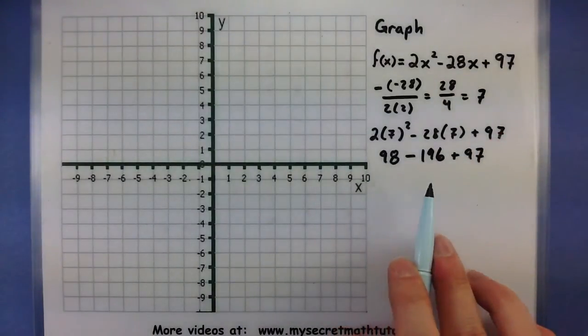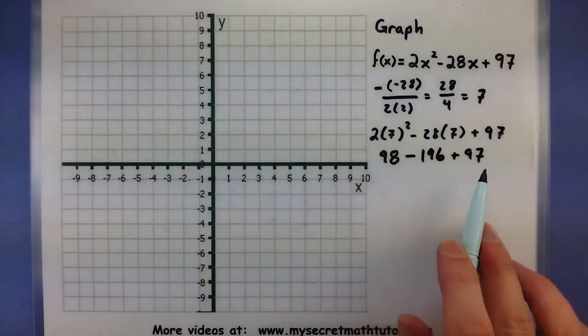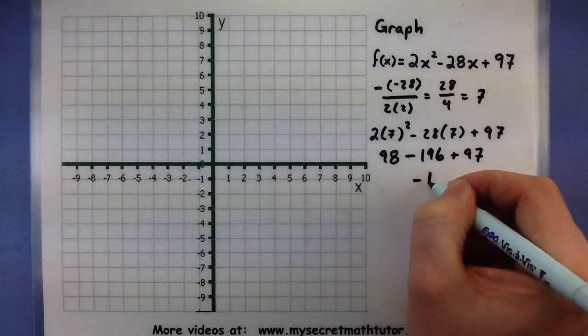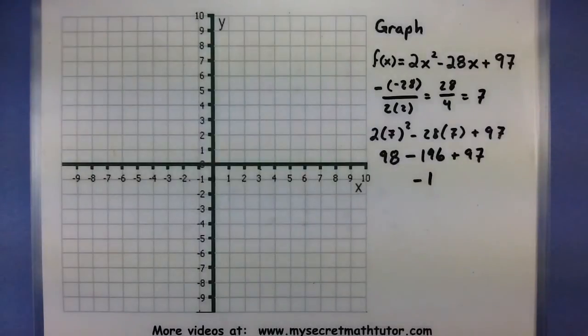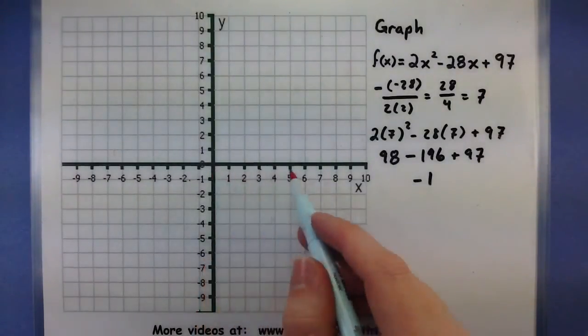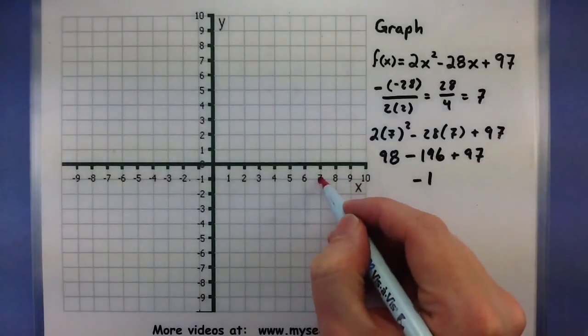98 minus 196 plus 97, all of that is a minus 1. So our vertex is located at 7 minus 1. 7 minus 1, there's our first point.